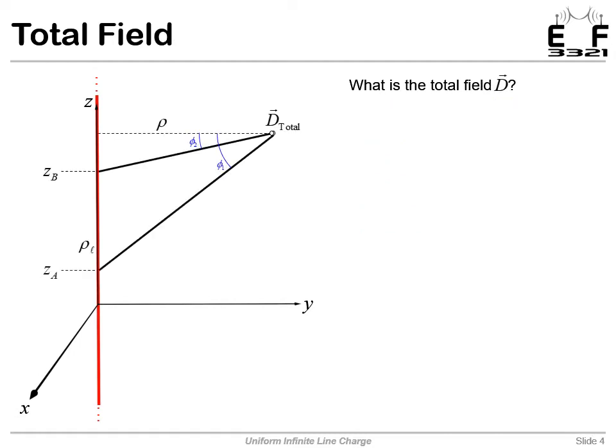So what's the total d field? Well, if our line becomes infinite, let's think about what happens to phi 1 and phi 2. What values do we use for those?